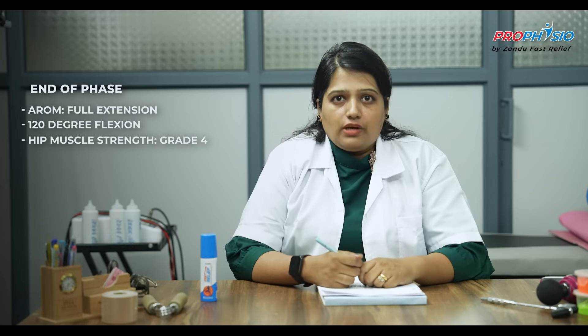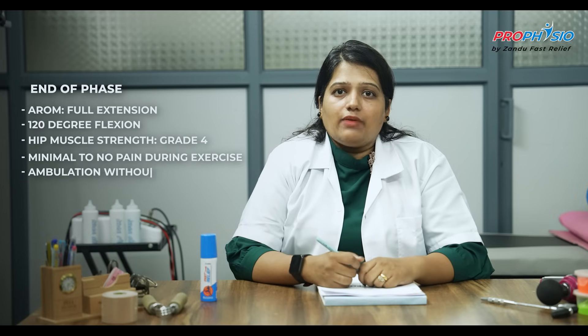By the end of phase two, the patient achieved active range of motion with full extension and 120 degrees of flexion, quadriceps, hamstrings, and hip muscle strength at grade 4, and minimal to no pain during exercises and ambulation without the cane.